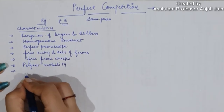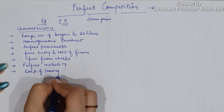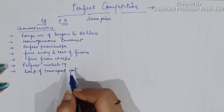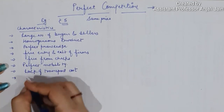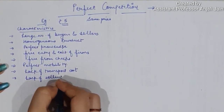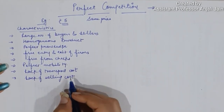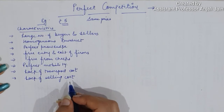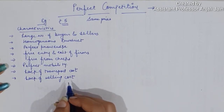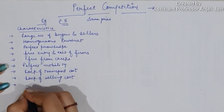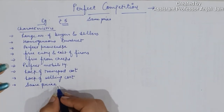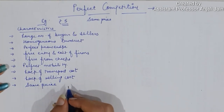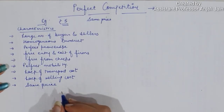Next is lack of transport cost, followed by lack of selling costs. Since the product is homogeneous, there is no need to incur selling costs. Next comes same price — as mentioned, the price is determined by market forces of demand and supply, and once determined, that price is accepted by each and every firm present in the industry.